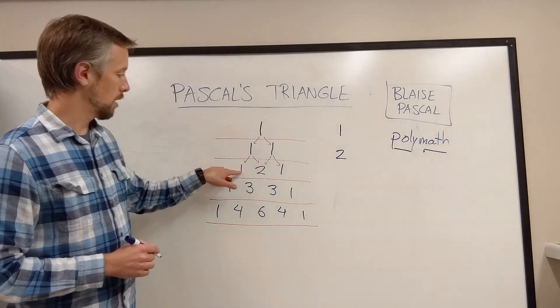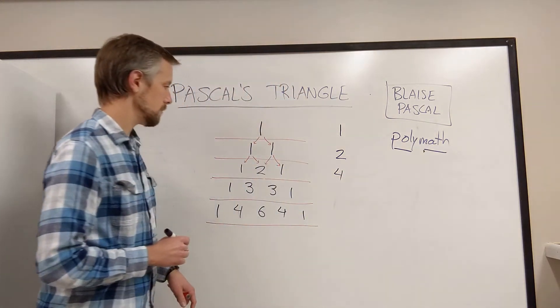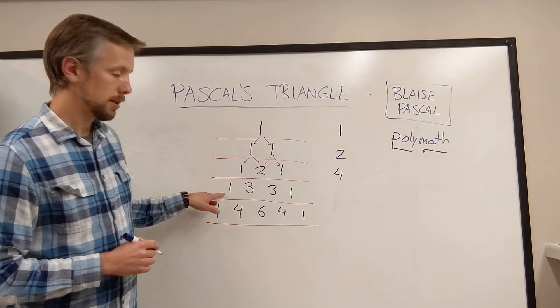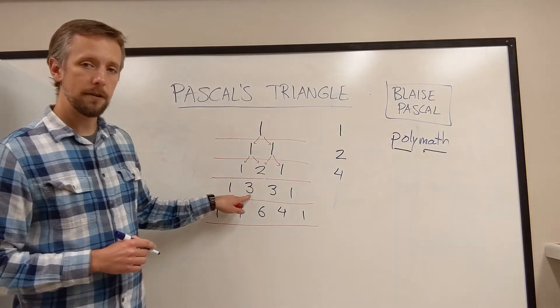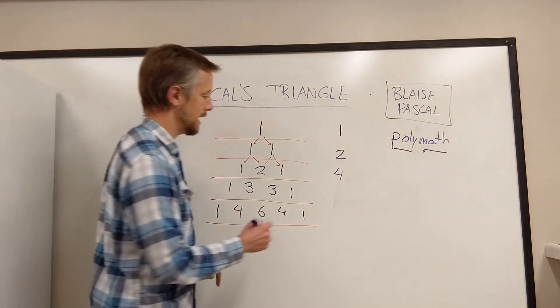In the third row, we'd have 1 plus 2 plus 1 for a total of 4. Let me know if you're seeing the pattern. In this row, 1 and 3 make 4, 3 and 1 also make 4. So 2 fours makes 8.